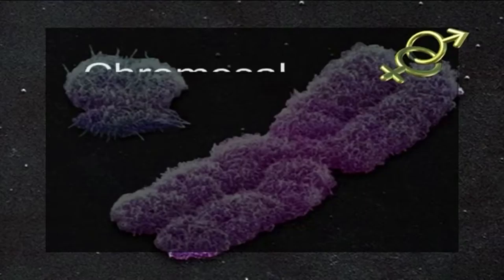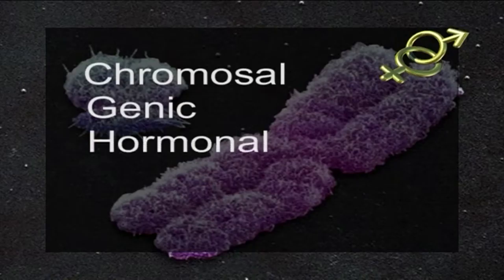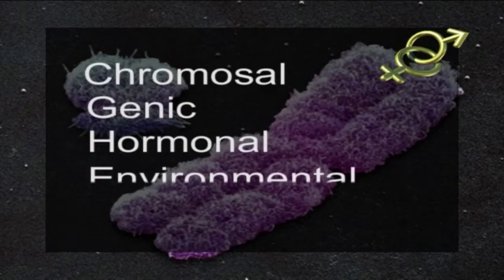The mechanisms of sex determination are essentially similar in both plants and animals, which were classified by earlier biologists into several groups: chromosomal, genic, hormonal, environmental, and nutritional.